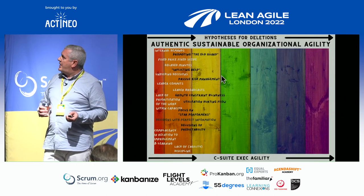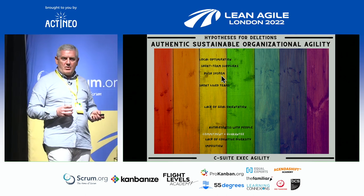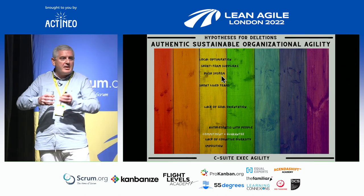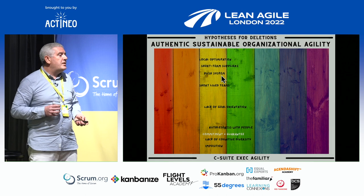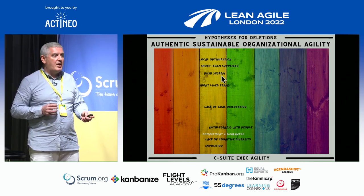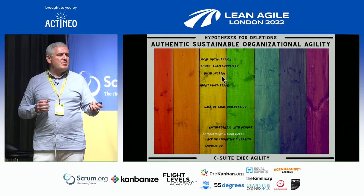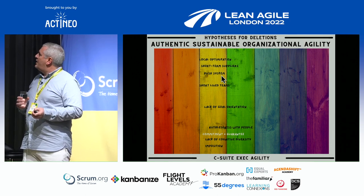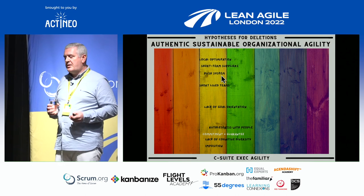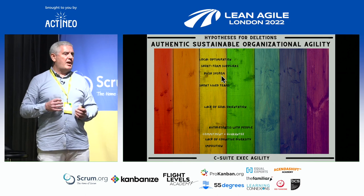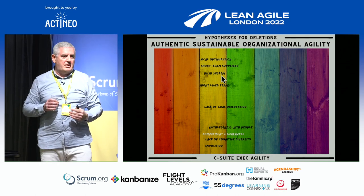We've got two sets of deletions so far, and now the third set. Here we've got local optimisation — just focusing on the agility of one team and not really seeing that we're making a difference. Short-term suppliers: I had a client who thought it was a great idea to do a tender every nine months to swap out the vendor — the knowledge was just going out the door every nine months. And a lack of goal orientation. Did you notice it didn't start with 'why'? I'm only talking about goal orientation now, because I find that when meeting an executive, I need to meet them where they are. Talking about goals, a lot of the time we're just like passing ships.